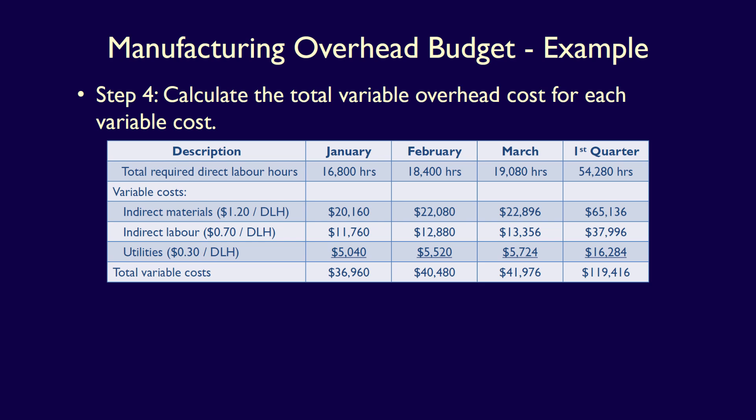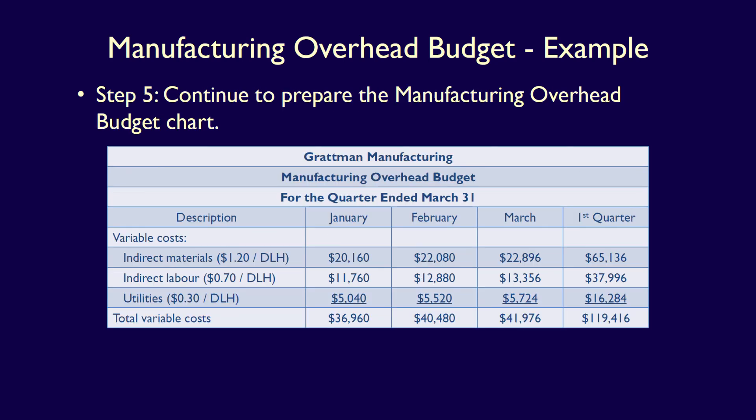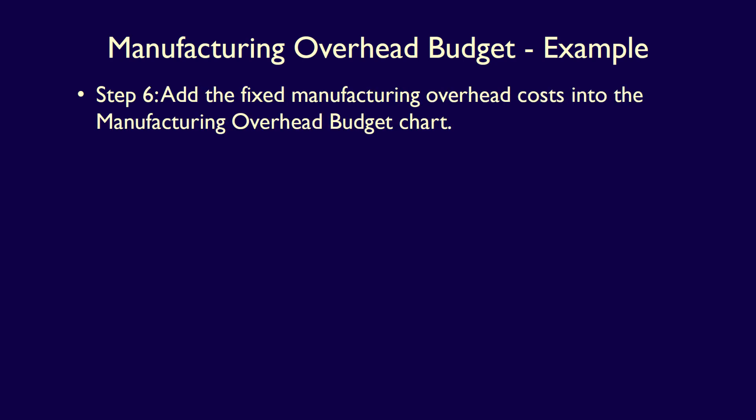We now have all of the variable costs, which means we can move on to step five – transfer the variable costs into the manufacturing overhead budget. Notice that we did not transfer the direct labour hour row into the budget, at least not yet. You can see that this will be a larger budget as the chart almost fills the whole page, but we've not even started on the fixed costs, which is step six.